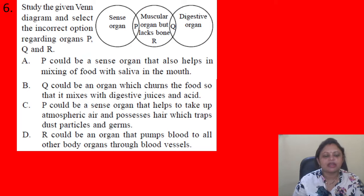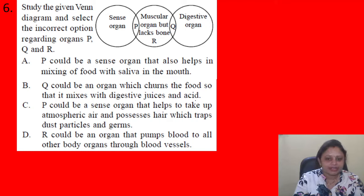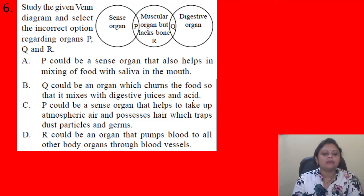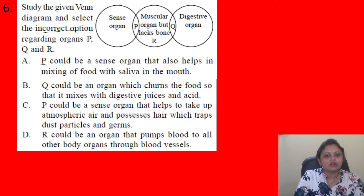Next question: Study the given Venn diagram and select the incorrect option regarding organ P, Q, and R. P is a sense organ and muscular organ but lacks bone; Q is a digestive organ and muscular but lacks bone; R is listed separately. Options: A) P could be a sense organ that helps in mixing food with saliva in the mouth; B) Q could be an organ that churns food so it mixes with digestive juices and acid; C) P could be a sense organ that helps take up atmospheric air and has hairs that trap dust particles and germs; D) R could be an organ that pumps blood to all body organs through blood vessels.